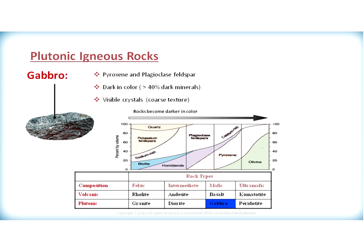Moving to plutonic rocks — rocks that form within the Earth — the first rock we look at is gabbro. Gabbro has the exact same composition as basalt but forms in a plutonic environment. It will mainly consist of pyroxene and plagioclase feldspar. It can have greater than 40% dark minerals, but the difference is it would have visible crystals. Therefore, we can see the mineral crystals in plutonic rocks, so we classify it with a coarse texture.